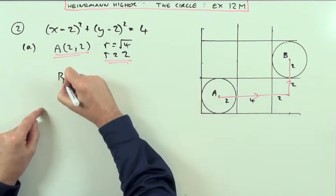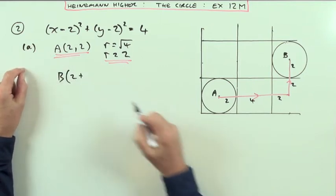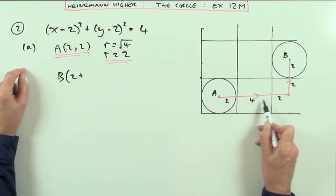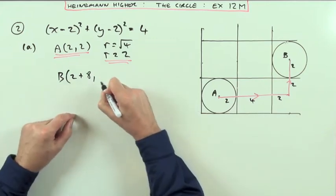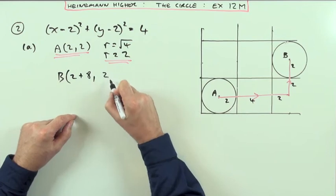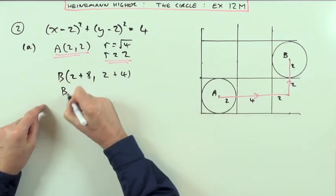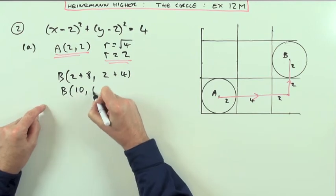For the coordinates of B - sorry, it's going to be: I start at (2,2) along and I go another eight, so two plus eight along. I start at two up and I'll go another two and two's four up, which means B is the point (10,6).